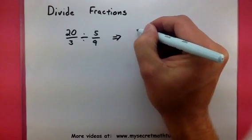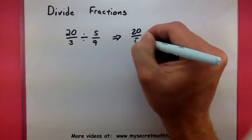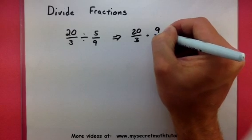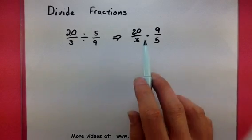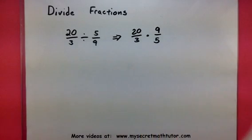So I'm going to change this problem into twenty-thirds multiplied by nine-fifths. Now if you recall when we multiply fractions, we want to multiply across the top and across the bottom.